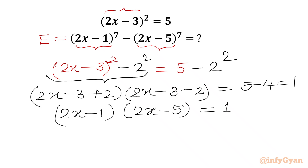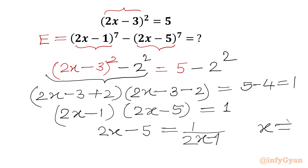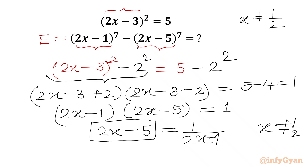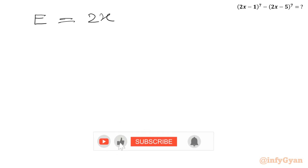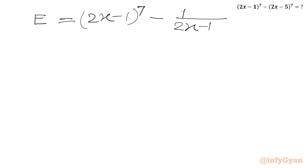Now I will divide both sides by (2x − 1), giving 2x − 5 = 1/(2x − 1), where x cannot equal one half. We then replace (2x − 5) in the required expression, so e becomes (2x − 1)⁷ − (1/(2x − 1))⁷.